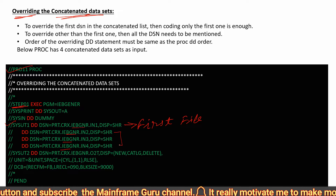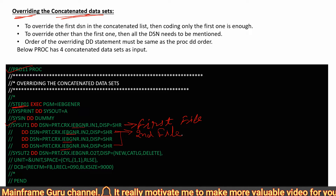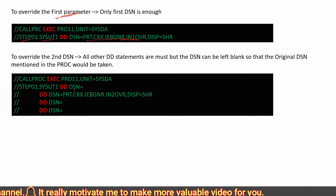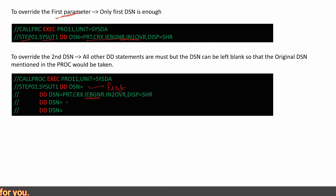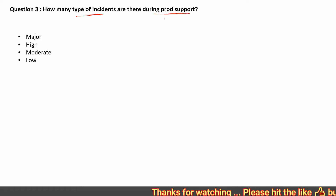If you want to override only the second file from the concatenated datasets, you must provide a blank entry for the first DSN, then give the updated file name for the second DSN. Since you are not overriding the third and fourth files, you keep those entries blank as well.